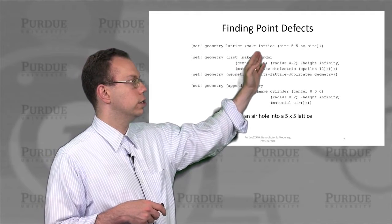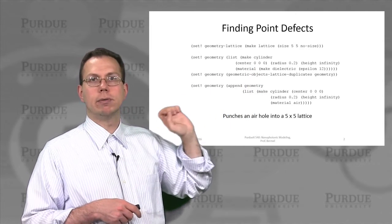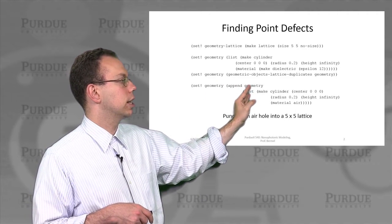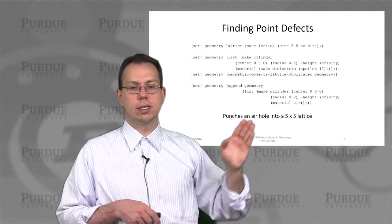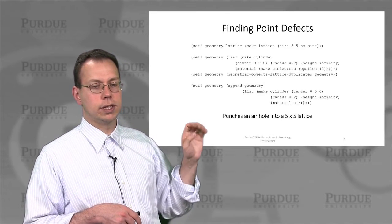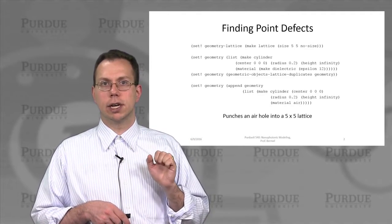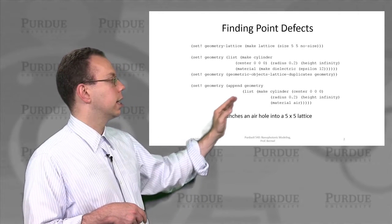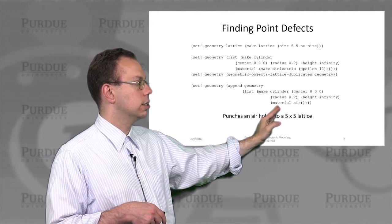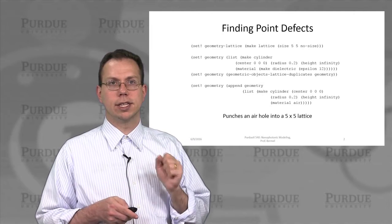In this case we're going to choose a supercell of 5 by 5. It's fairly similar to before — we define a cylinder, but we actually need 25 of them. Rather than explicitly defining all 25, we use the geometric objects lattice duplicates function, which reproduces a 5 by 5 grid in both directions over the full geometry. Then we append a single air cylinder, which punches a hole right in the middle of our 5 by 5 supercell, creating the defect.